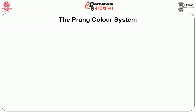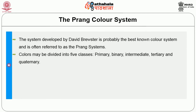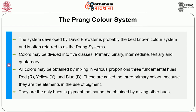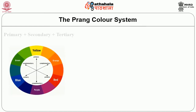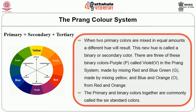The Prang color system, developed by David Brewster, is probably the best known color system. Colors may be divided into five classes: primary, binary, intermediate, tertiary and quaternary. All colors may be obtained by mixing in various proportions three fundamental hues — red, yellow, blue — called the three primary colors because they cannot be obtained by mixing with other hues. When two primary colors are mixed in equal amounts, a binary or secondary color results. There are three binary colors: purple (violet) made by mixing red and blue; green made by mixing yellow and blue; and orange made from red and yellow. The primary and binary colors together are commonly called the six standard colors.